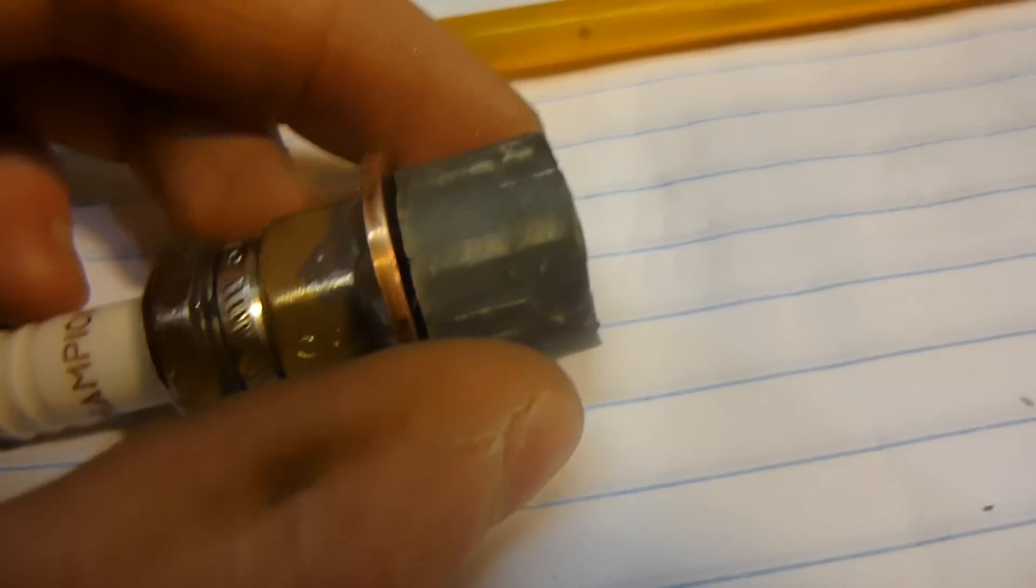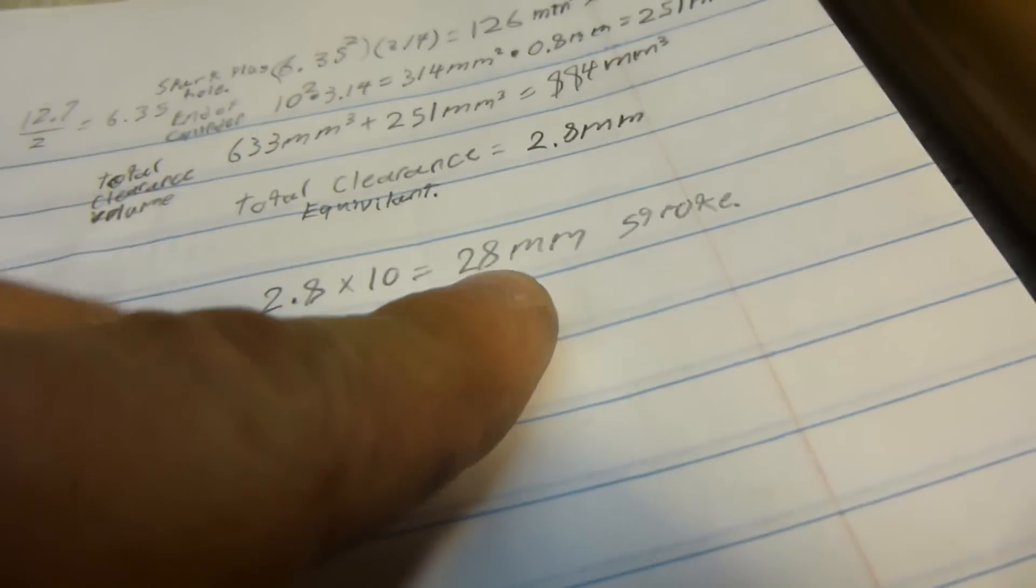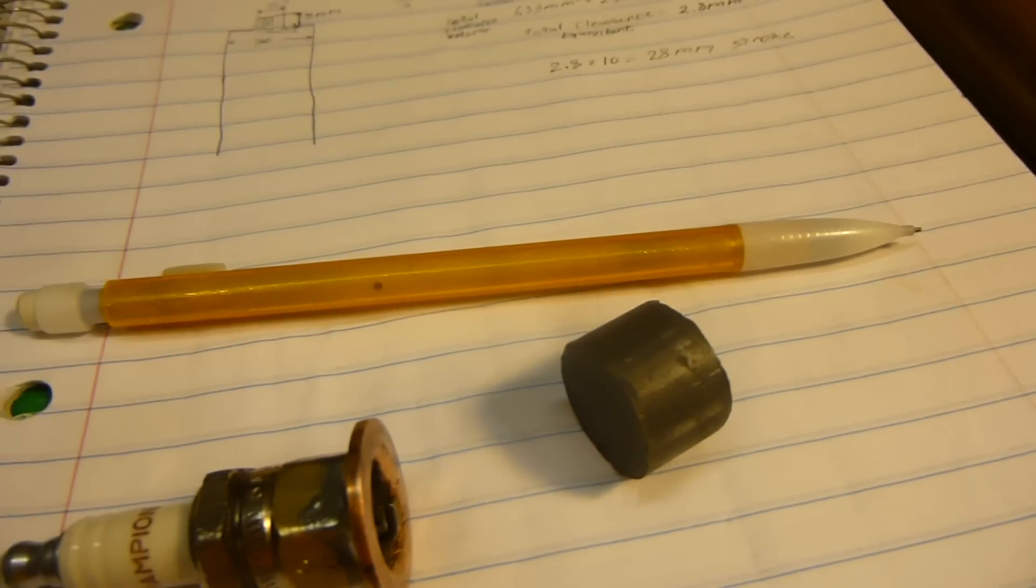So 880 cubic millimeters of space there. Total clearance is equivalent to 2.8 millimeters if you scale it up to the area of this. In other words, I need 28 millimeter stroke so the piston can go back and forth 28 millimeters in order to get a 10 to 1 compression ratio.